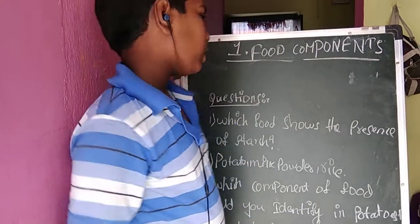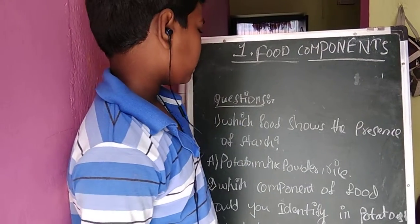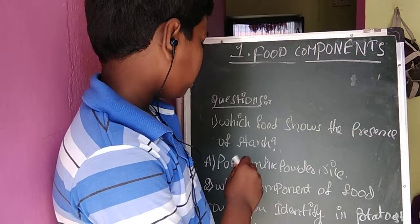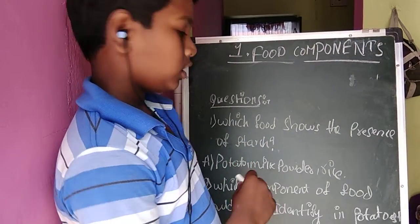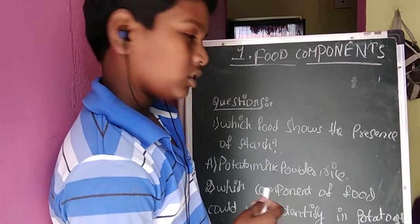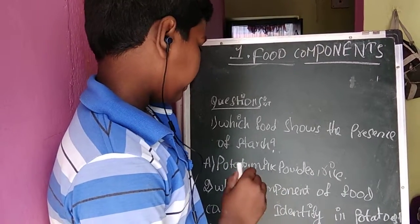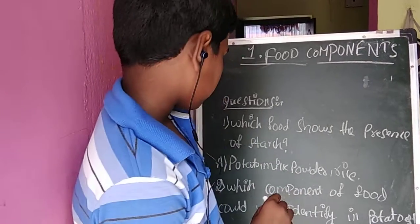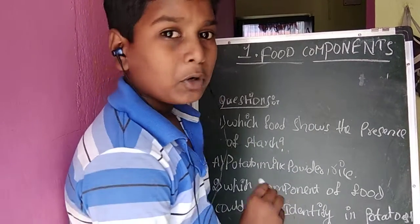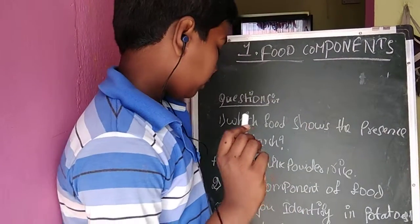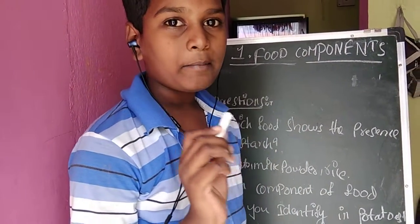Let us do some questions. First question: which food shows the presence of starch — potato, milk powder, and rice? Second question: which component of food could you identify in potatoes? Carbohydrates, right? Third question: which food items contain more fat — ghee and butter?